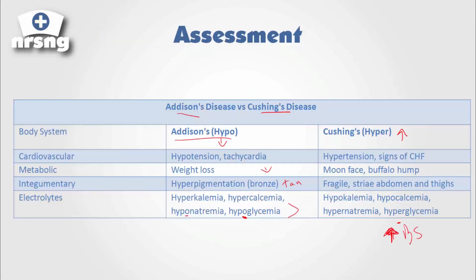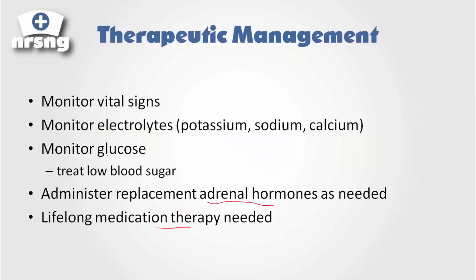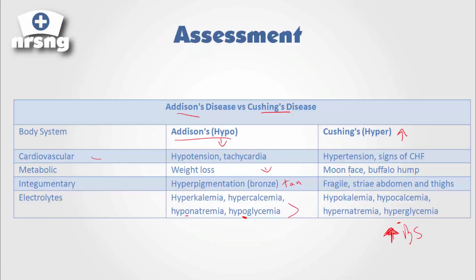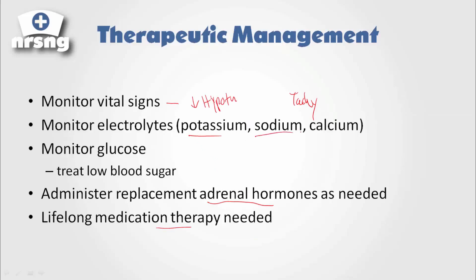What are we seeing cardiovascularly? With all these lectures, you'll notice I'm always reverting back to what's happening with our cardiovascular, neuro, and respiratory systems — because without these systems working, we will die quickly. With Addison's, we have hypotension and tachycardia, so we need to monitor vital signs. We also have hyperkalemia, which can cause severe cardiac dysrhythmias, so we want to monitor potassium, sodium, and calcium levels.